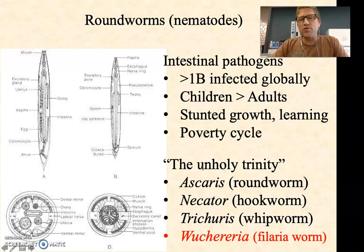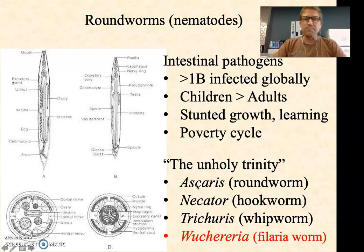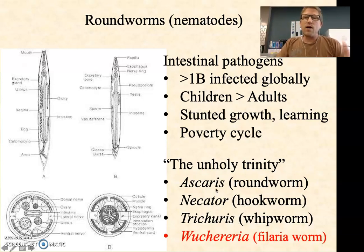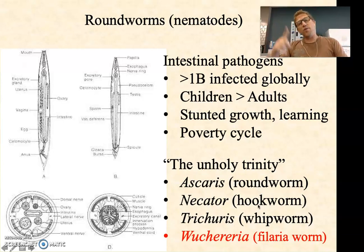Some people refer to what's called the unholy trinity. Something like a billion people are co-infected right now with roundworm, hookworm, and whipworm all at the same time. All of these fall into the nematode category. Ascaris is considered the roundworm; Necator is the most common hookworm; Trichuris is the most common whipworm. There's a fourth that often co-infects people — Wuchereria — which is called a filarial worm, and filarial worms are almost always mosquito-transmitted.